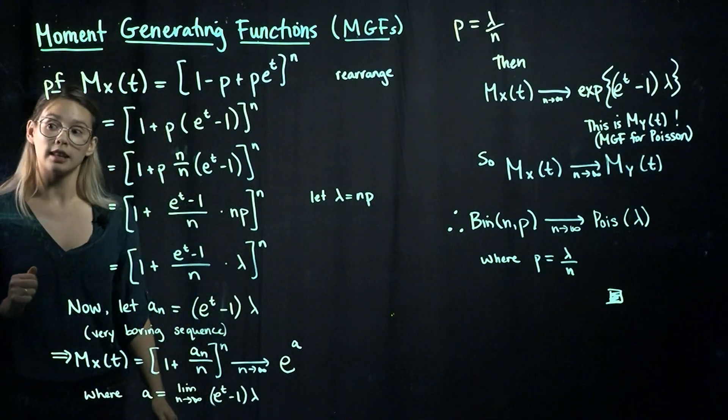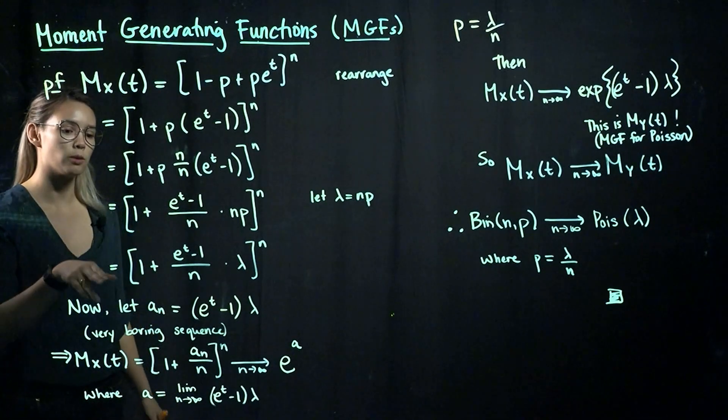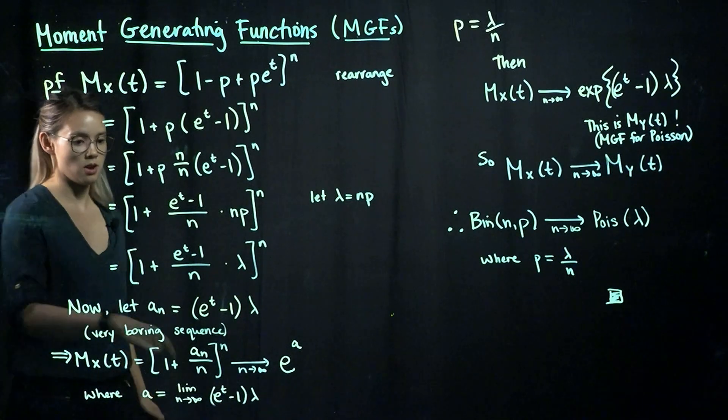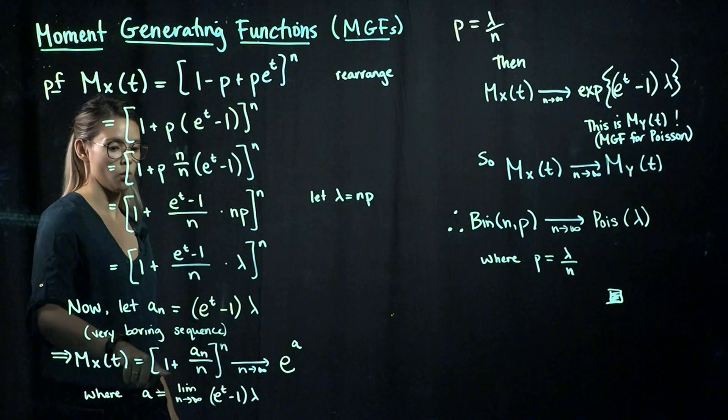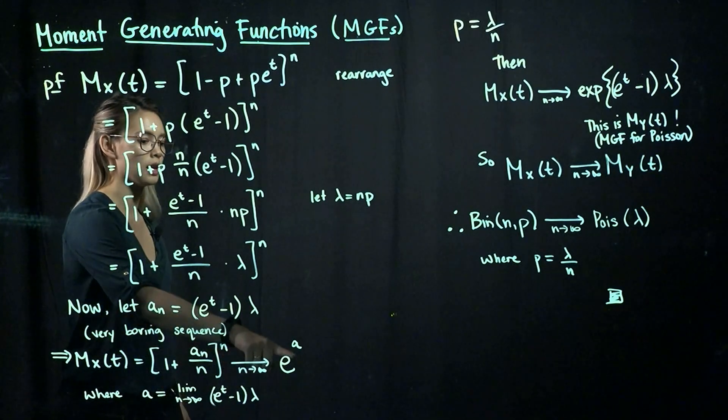Now we're going to use that lemma that we talked about in the previous video. So the lemma said that if we have some sequence a to the n converging to a, then we get 1 plus a to the n over n, all that to the n will converge to e to the a.